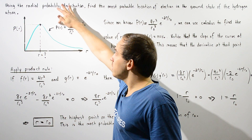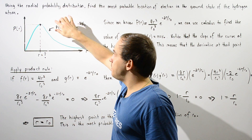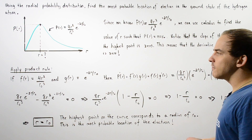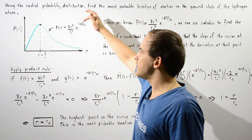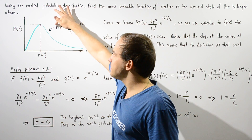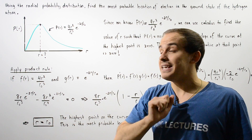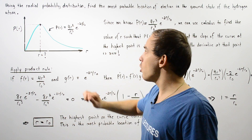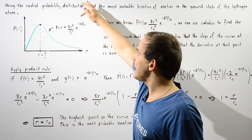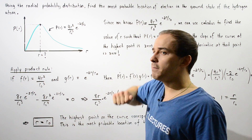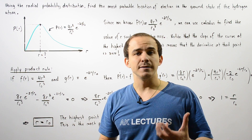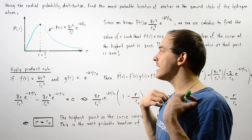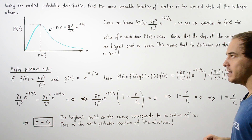Recall that the radial probability P depends on r, where r is the distance away from the center of the nucleus of the atom. P(r) is equal to 4r² divided by r₀³, multiplied by e to the negative 2r divided by r₀, where r₀ is simply the Bohr radius — 5.29 times 10 to the negative 11 meters.